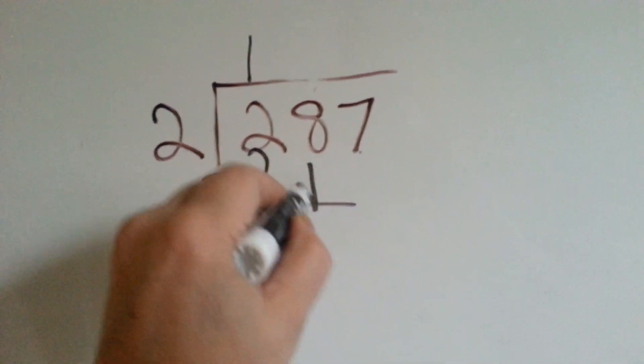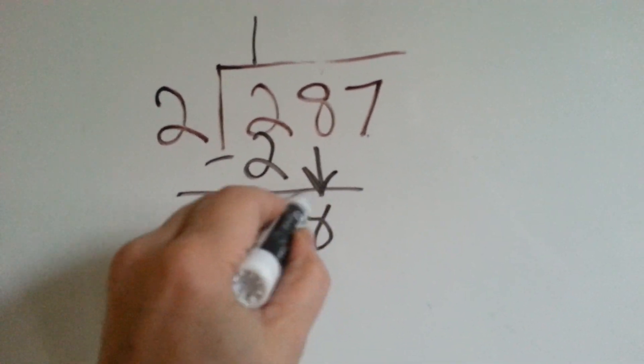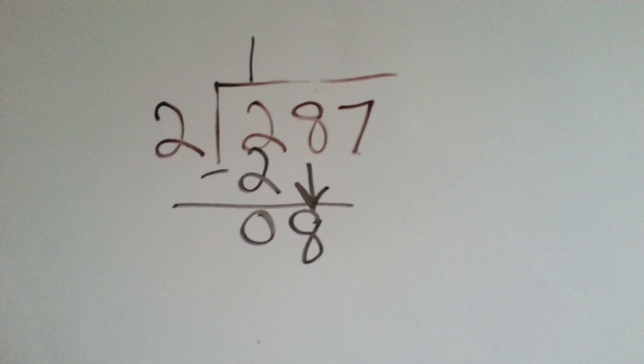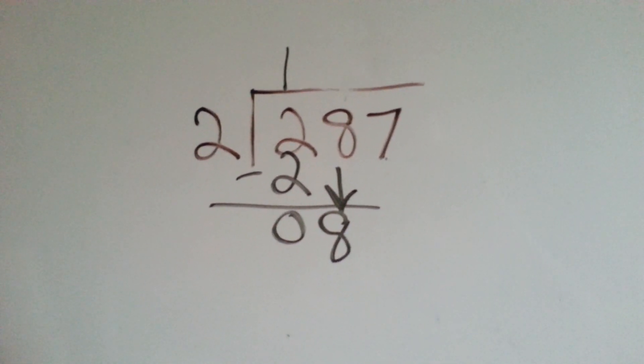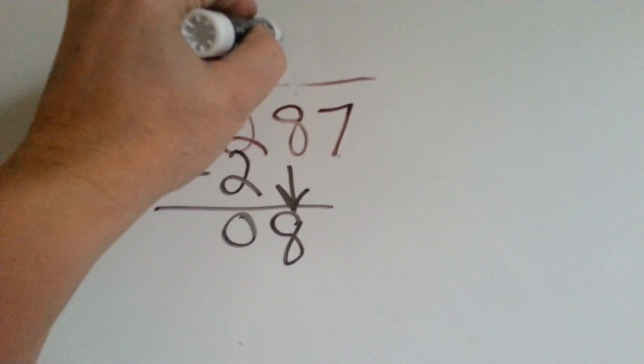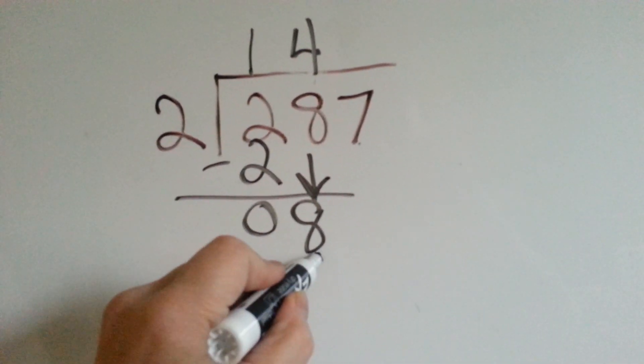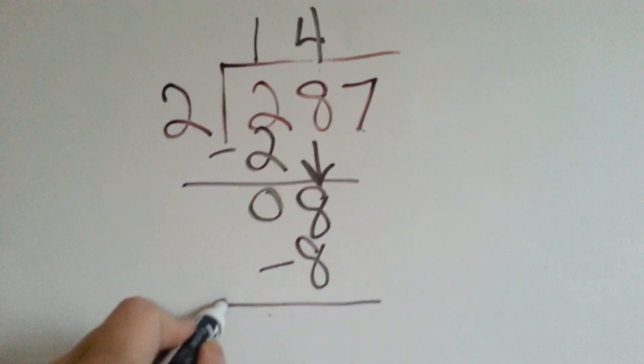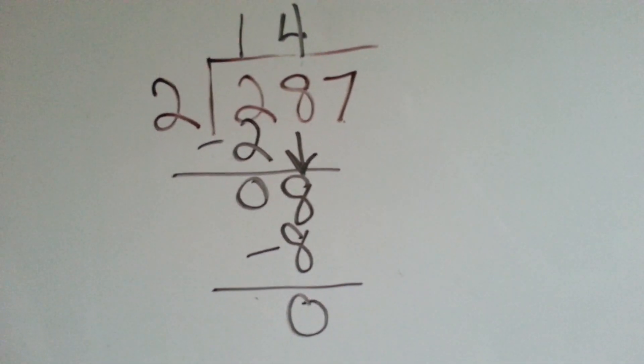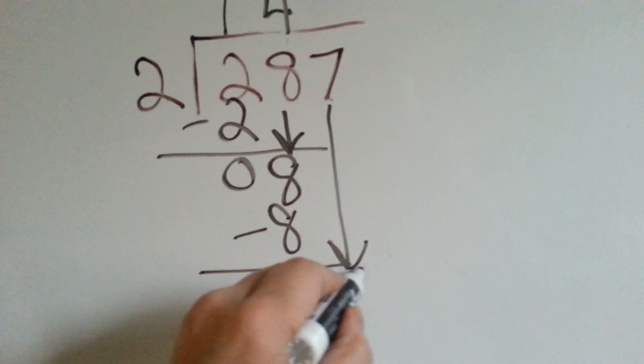Now it's the 8's turn to come down. 2 goes into 8 how many times? 2 times what is 8? 2 times 4. So we're going to put our 4 up here. We're going to do our multiplication and get 2 times 4 is 8. We're going to do our subtraction and get another 0.